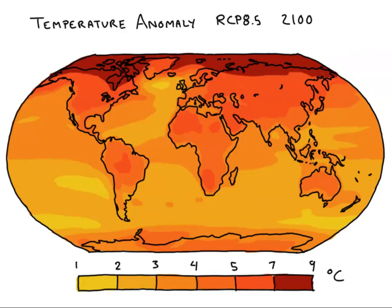GCMs can also show us how changes will differ from place to place on the Earth. Here we see a map of temperature anomalies in the year 2100 under the RCP 8.5 scenario. You can see that temperature rises are predicted to be higher in the Arctic than in other parts of the world.